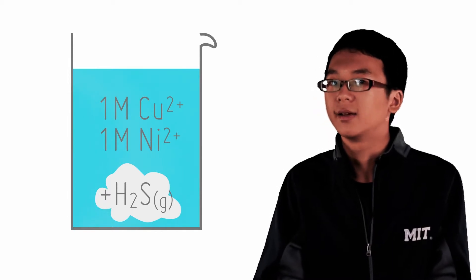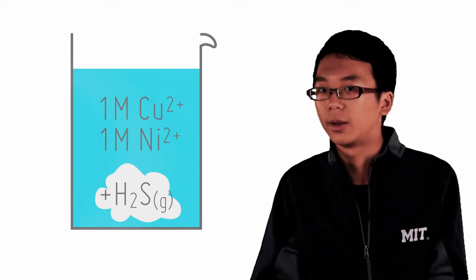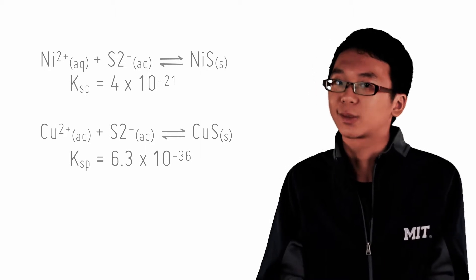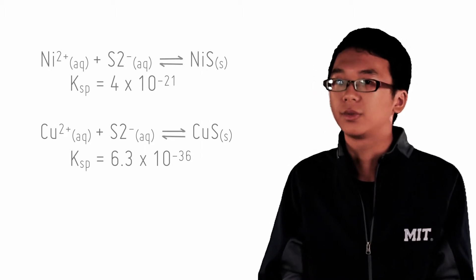But going back to the problem, the KSP of NiS is 4 times 10 to the power of negative 21, while the KSP of CuS is 6.3 times 10 to the power of negative 36.